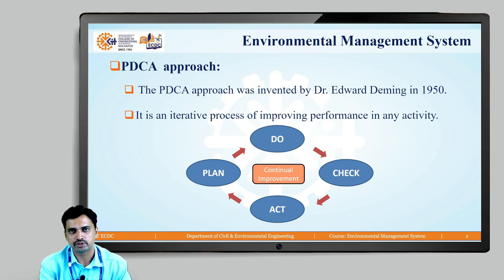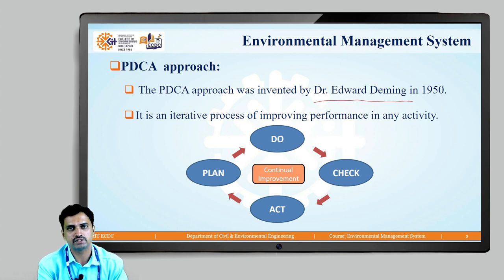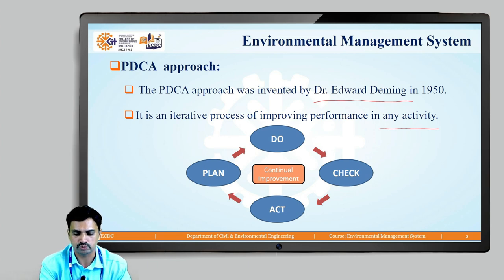The PDCA approach was invented in 1950 by Dr. Edward Deming. He was known to be a quality guru in his field. If we want to enhance the performance of any activity, we can use this approach and we are able to improve the performance over a period of time. This PDCA approach consists of four elements: the first one is Plan, then Do, then Check, and the fourth one is Act.